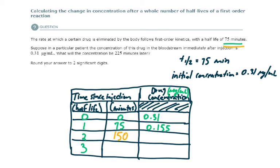So at 150 minutes at that mark, we have reached our second half-life. And at the second half-life, half of this will be gone. So 0.155 divided by two is 0.0775.